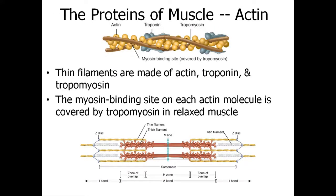The thin filaments — actin — are made of actin, troponin, and tropomyosin. The myosin binding site on each actin molecule is covered by troponin when the muscle is in a relaxed state. Here we've got actin, troponin, and tropomyosin, with the M-line holding the thick filaments in place and Z-discs denoting one sarcomere.